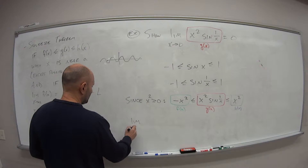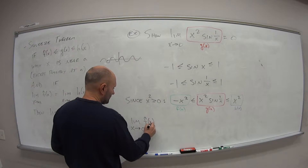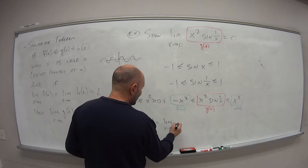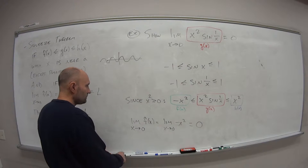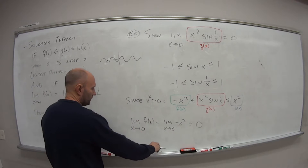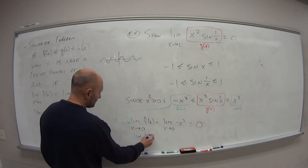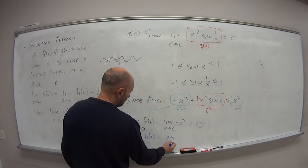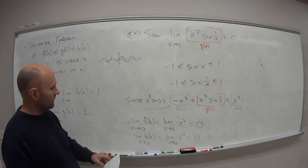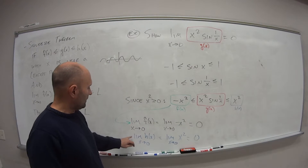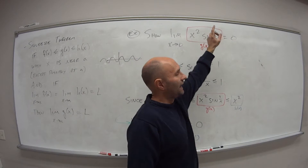So let's find the limit of f(x) first as x goes to zero. The limit as x goes to 0 of f(x) is the limit as x goes to 0 of −x², which is in the domain so I can do direct substitution — that's just 0. And for h(x), the limit as x goes to 0 of positive x² is also 0. So by the squeeze theorem, if the limit of f(x) as x goes to 0 is 0 and equals the limit of h(x) as x goes to 0, which is also 0, then the limit as x goes to 0 of g(x) must be 0.